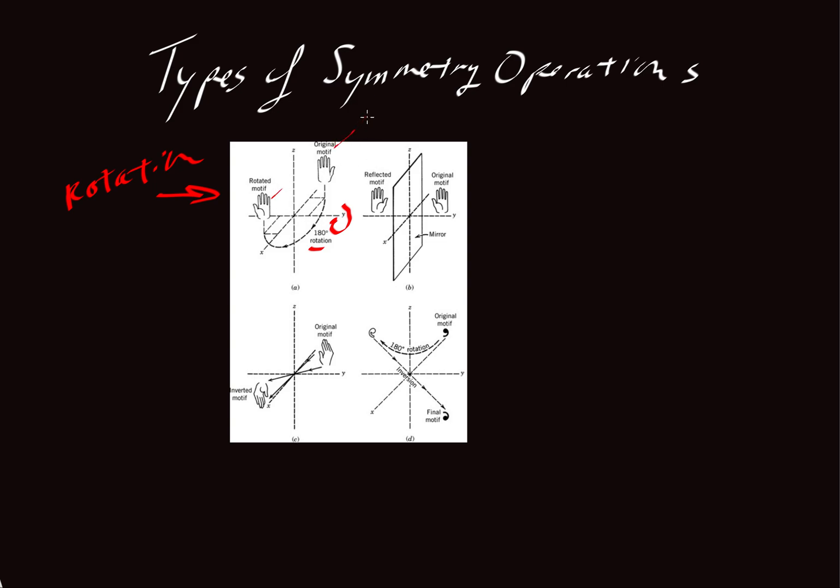So this hand is referred to as a motif. It doesn't have to be a hand, it could be an atom or a set of atoms or anything else that you like. So in this case they're showing a hand. And as you'll see in a moment, using a hand has some advantages. So this is an example of a rotational axis of symmetry. In this case the rotational axis is the y-axis here.